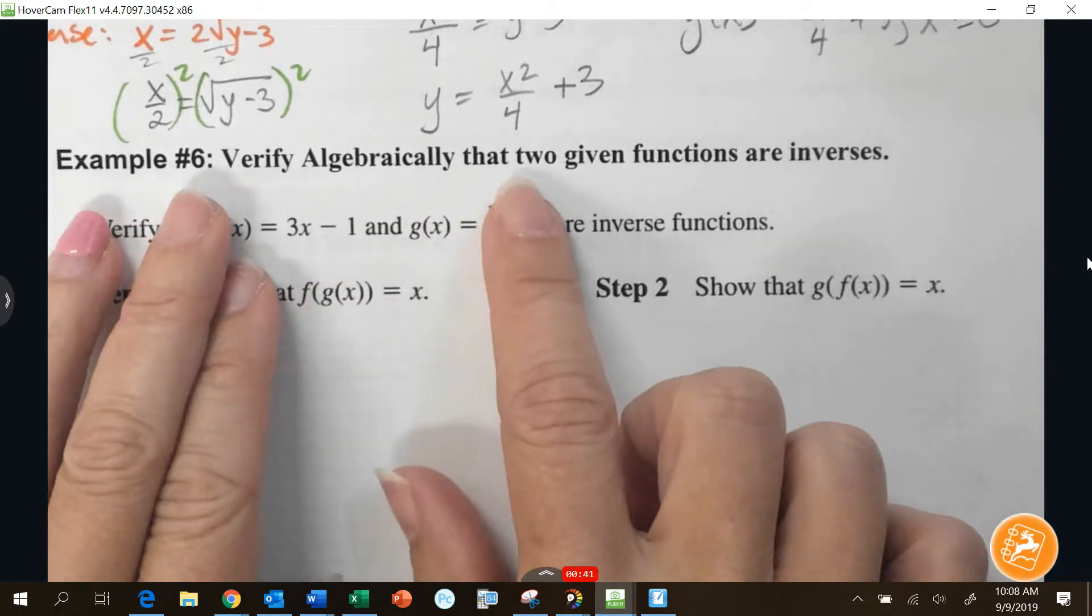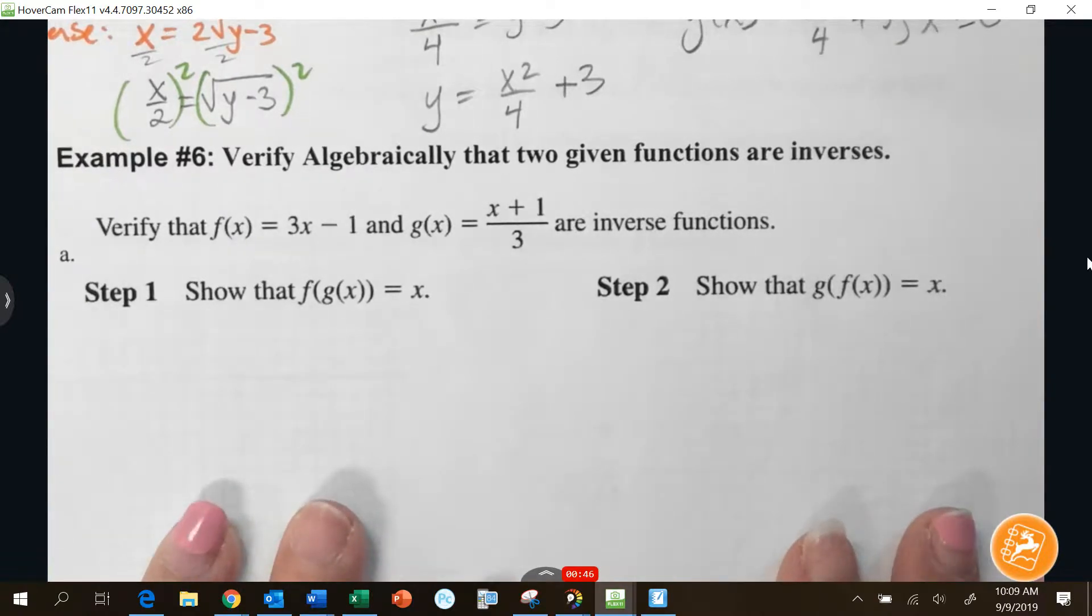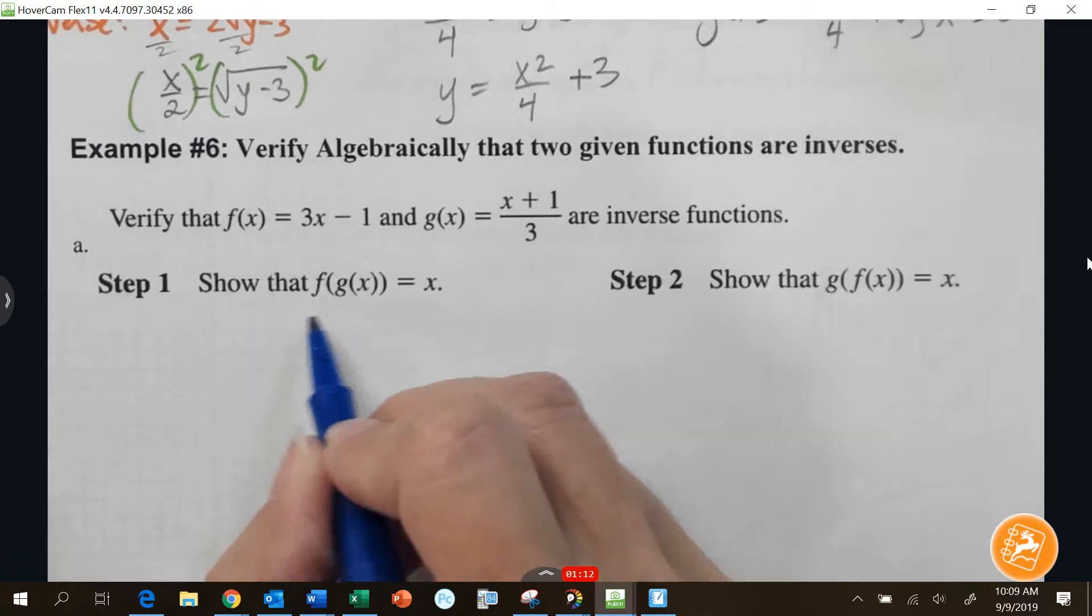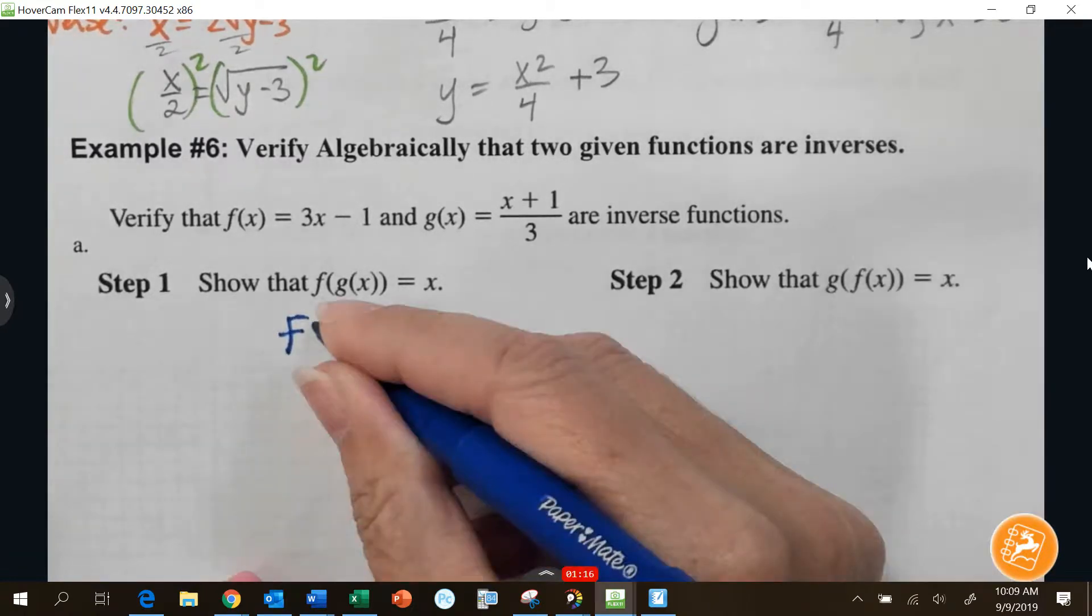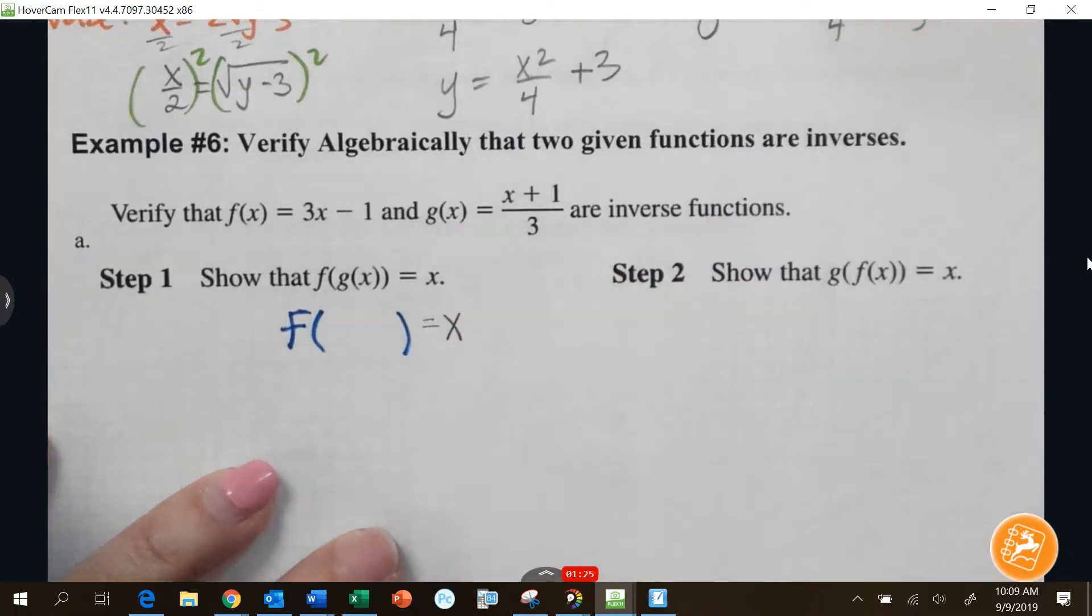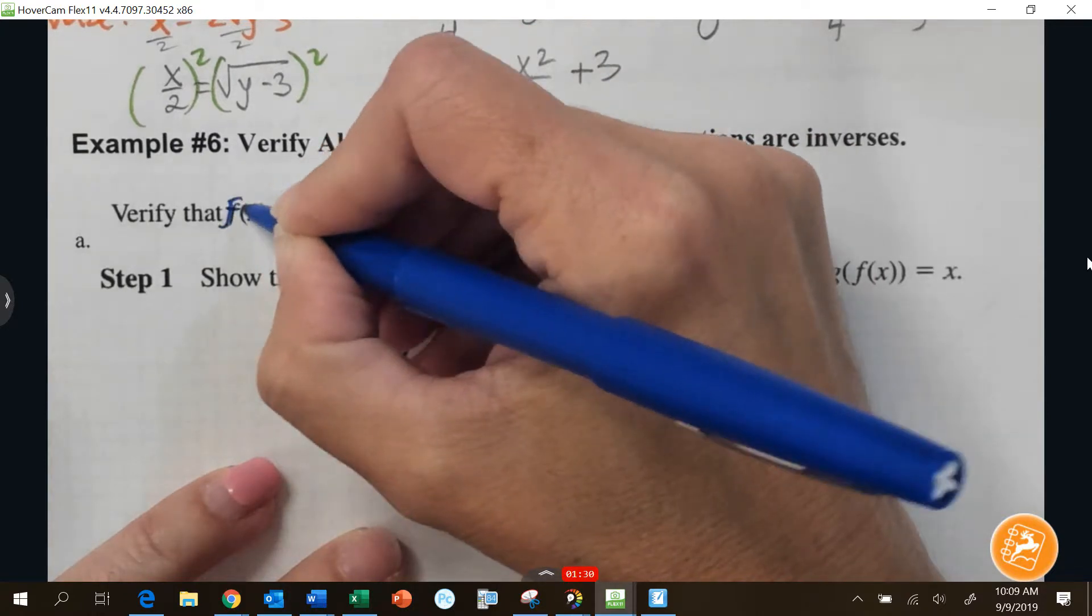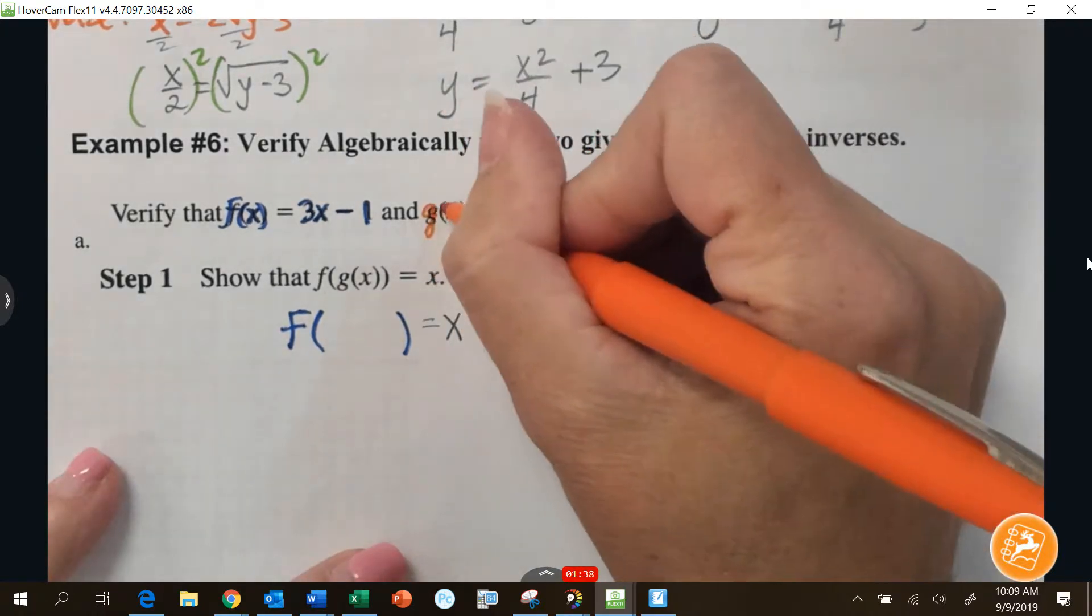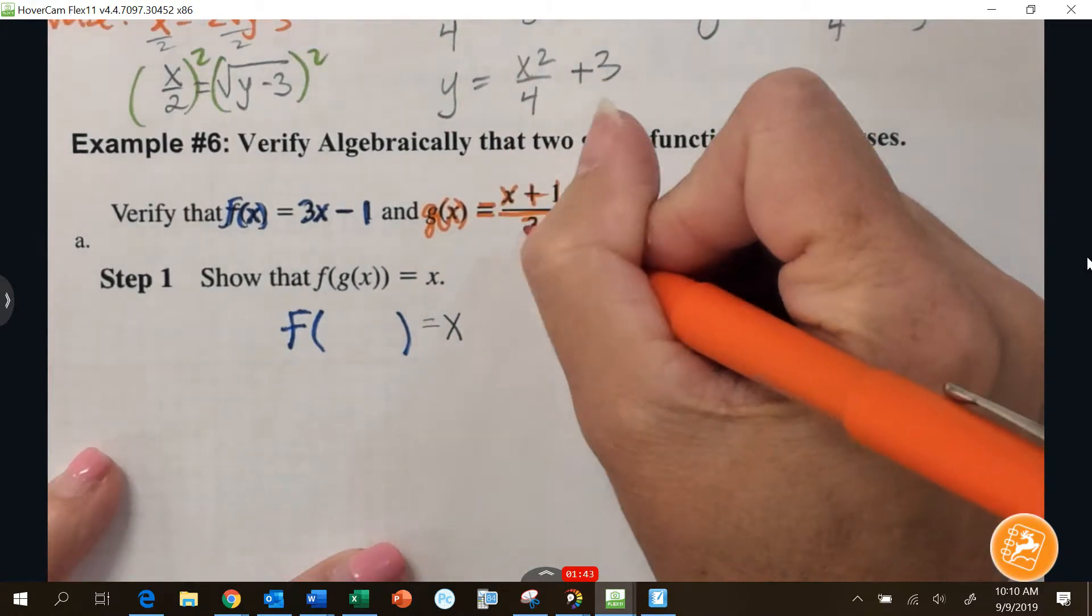When I say verify algebraically, you have to show all the steps. So I'm going to do exactly what I expect you to do on a quiz or a test to show all the steps. So that's what you should do in homework too. Now, I feel like it helps some people to color code some of this, so I'm going to rewrite it using color if that helps you great. So I'm going to do anything that has to do with the f function in blue. So f of x is 3x minus 1. And I'll use opposite for g of x. I'll use orange. g of x equals x plus 1 divided by 3 for orange.